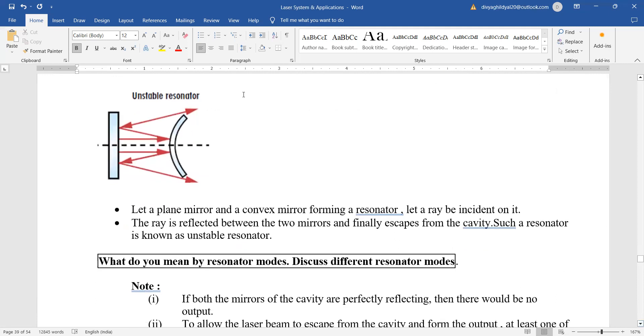Unstable resonator, you take a plain mirror and a convex mirror. Let a ray of light be incident on it. The ray is reflected between the mirror and finally escapes from the cavity. Such a resonator is known as an unstable resonator.